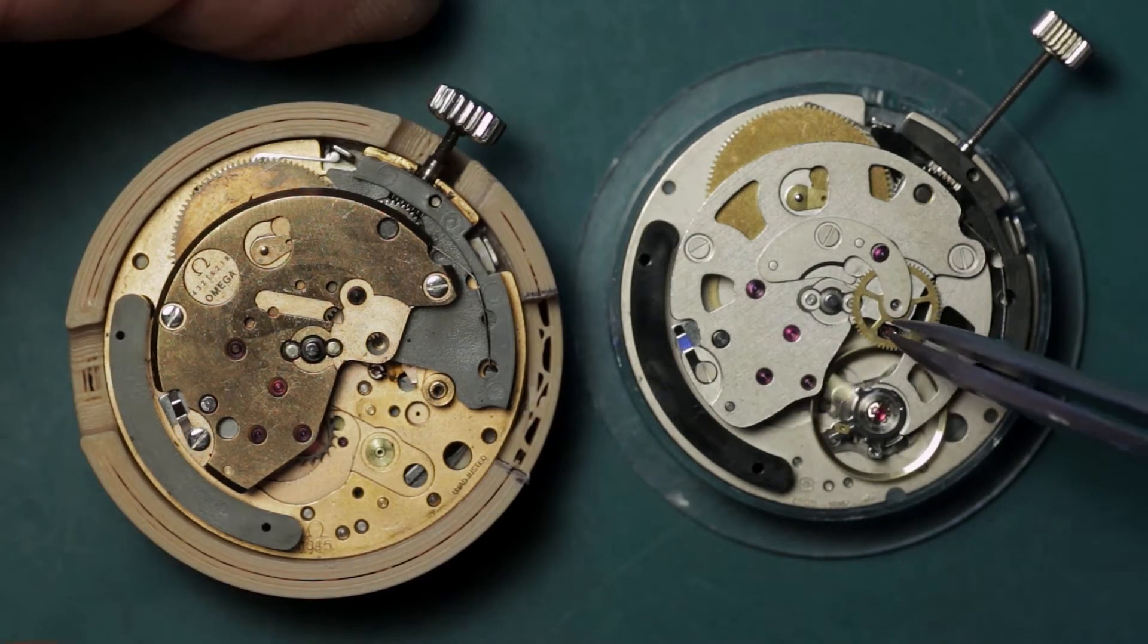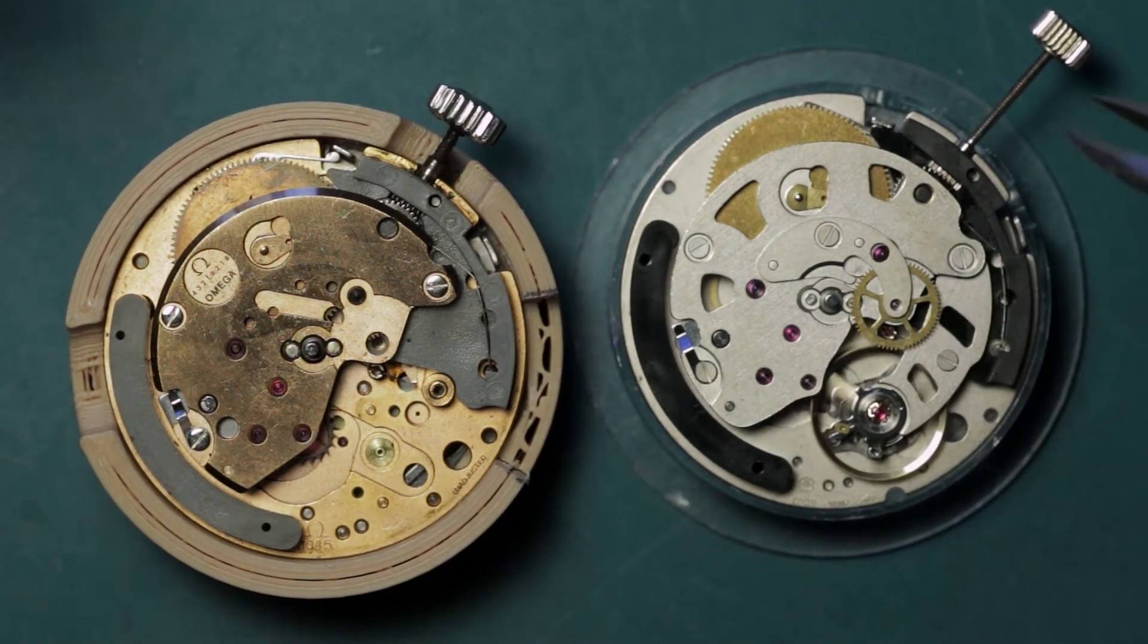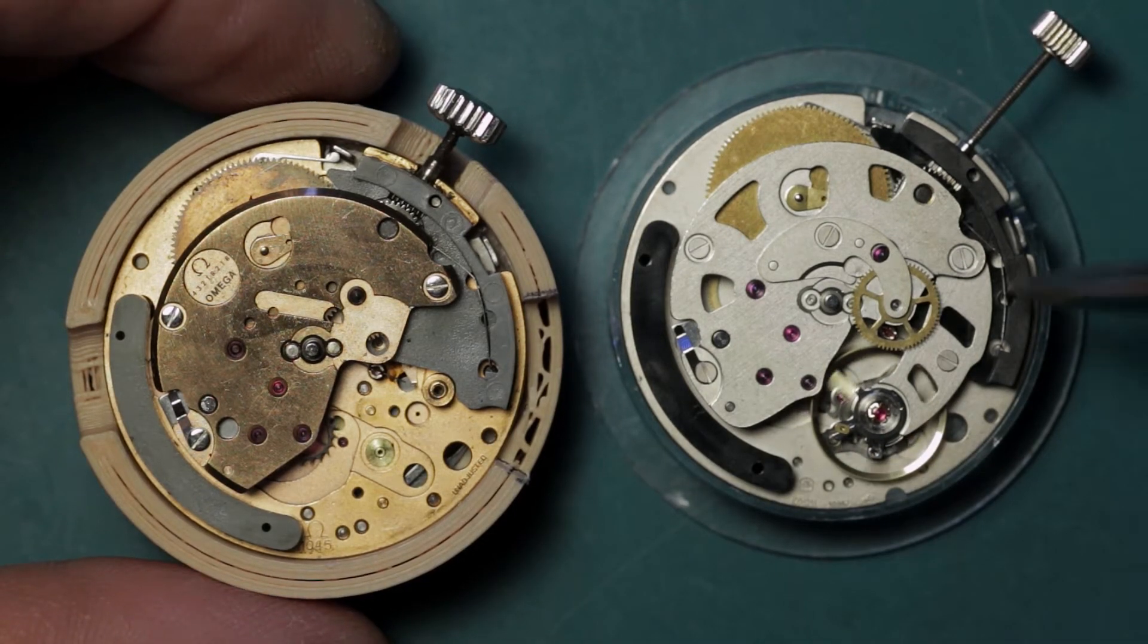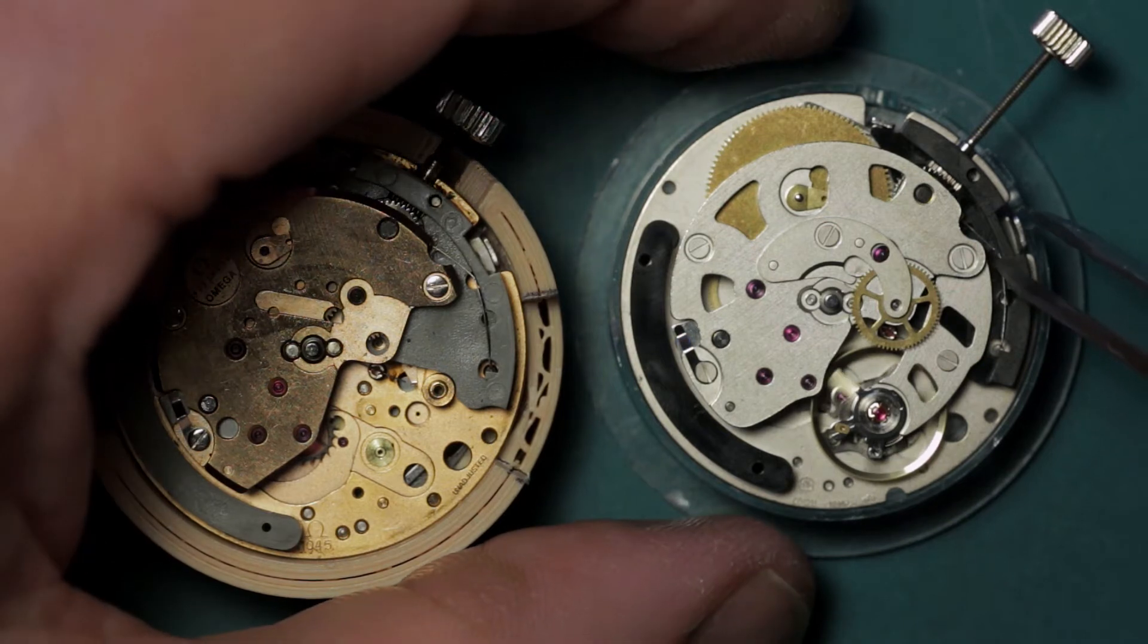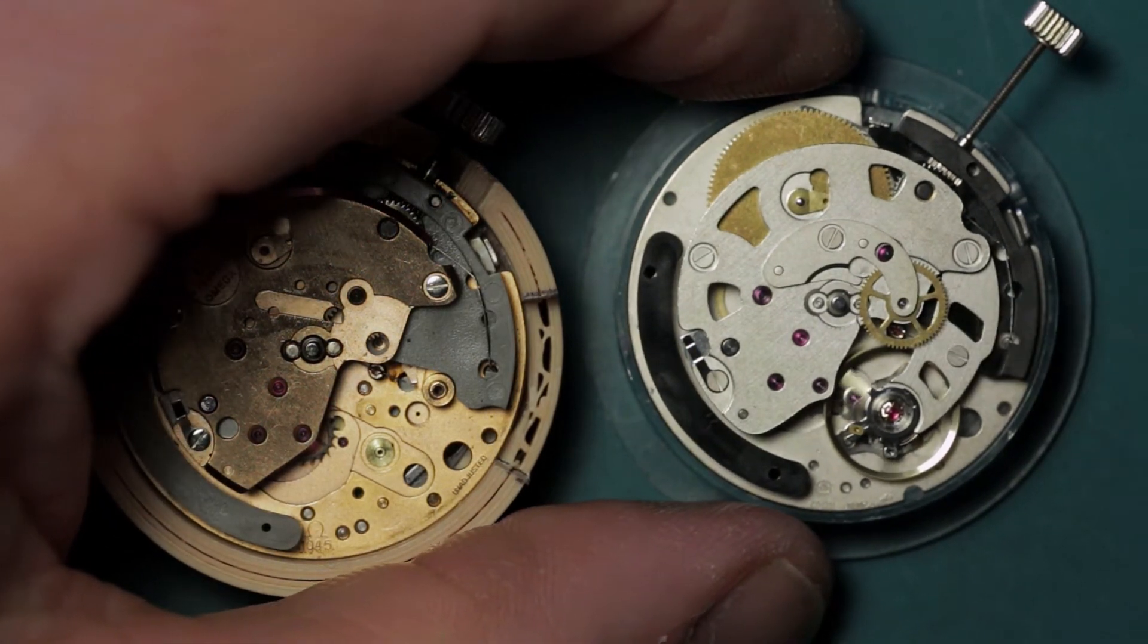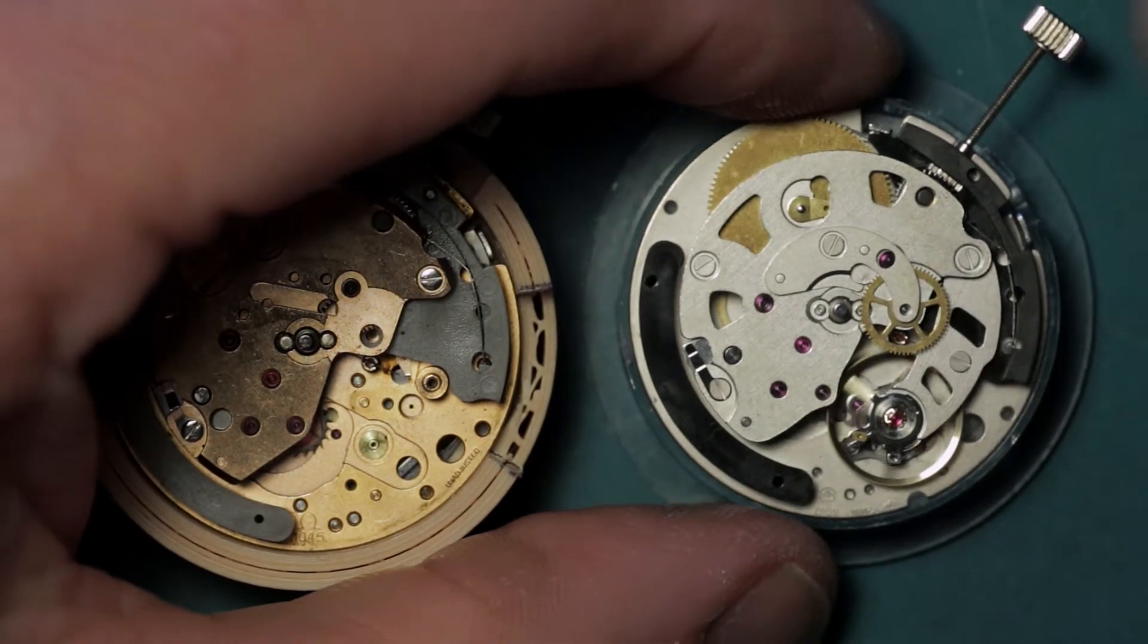And otherwise, everything else is pretty much the same. You've got these two plastic delrin, or whatever they happen to be, sections with the click spring down here. This is part of the automatic winding mechanism.